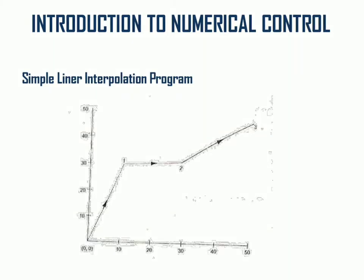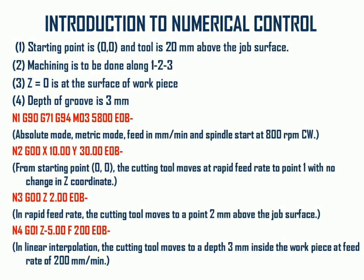Now a simple linear interpolation program is given. We need to prepare one single slot from point 0.1 to point 0.3, as seen on the diagram. The tool is placed at the origin first, then moved from origin to 0.1, 0.1 to 0.2, and 0.2 to 0.3. The starting point is the origin and the tool is 20 mm above the job surface.